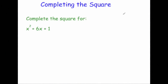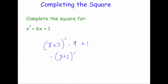Let's complete the square for x squared plus 6x plus 1. Because it's x squared you write x; it's 6x so you write plus 3, then put that in brackets squared. You then take away 3 squared, which is minus 9, then put on plus 1. Simplifying: x plus 3 squared, and minus 9 plus 1 is minus 8. So if you were to expand the bracket x plus 3 squared and take away 8, you'd get the original quadratic.